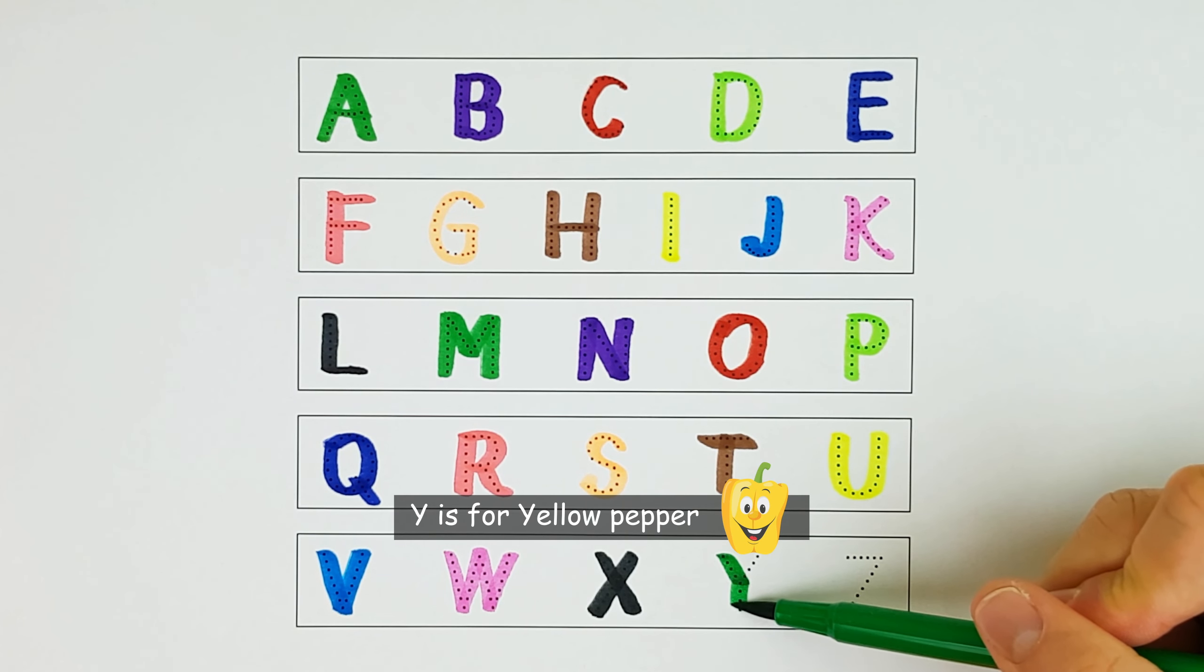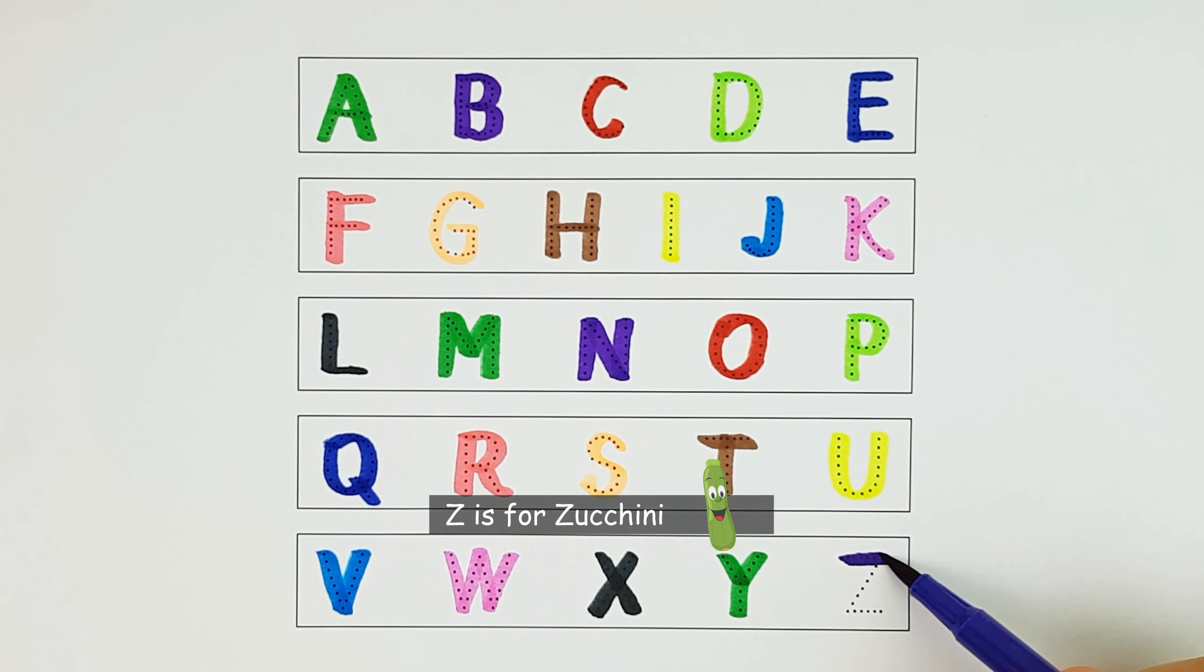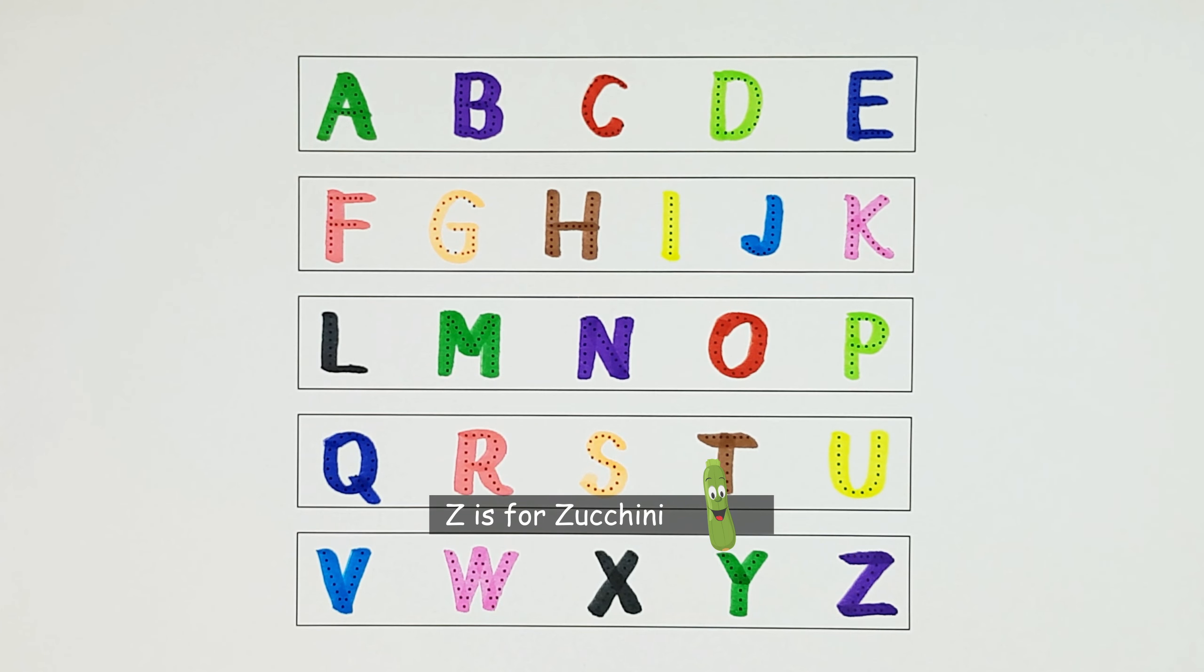Y. Y is for Yellow Pepper. Z. Z is for Zucchini.